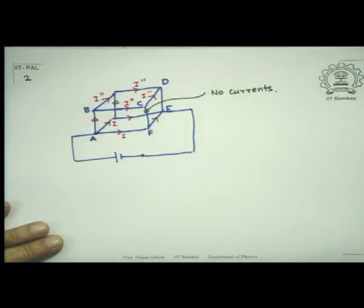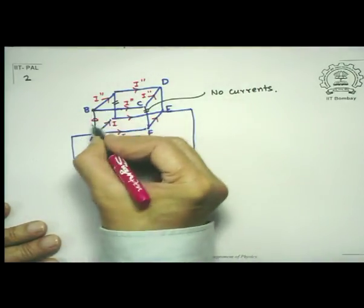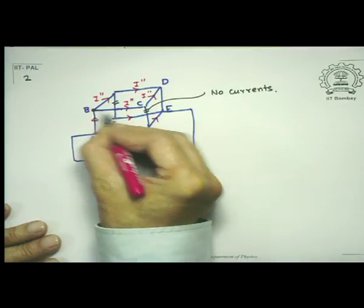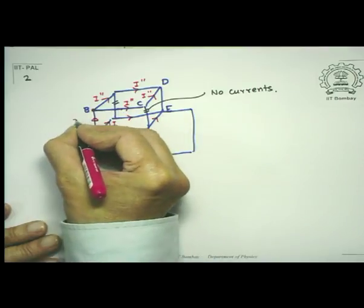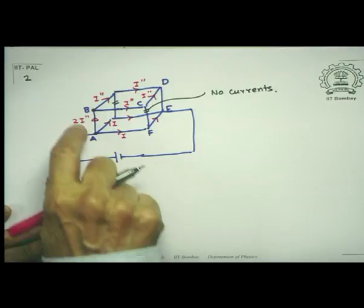By the junction rule, the current coming into point B must equal the sum of the two currents moving out. So that current must be equal to 2 I double prime. Notice that in the previous case I had I, I, and I, but that is no longer true here.